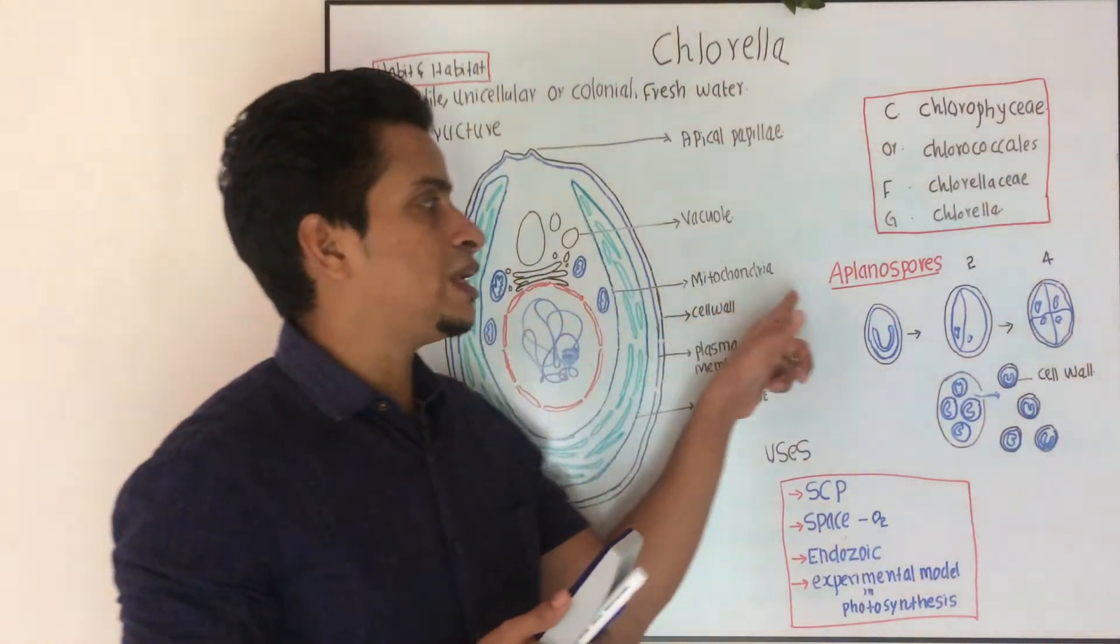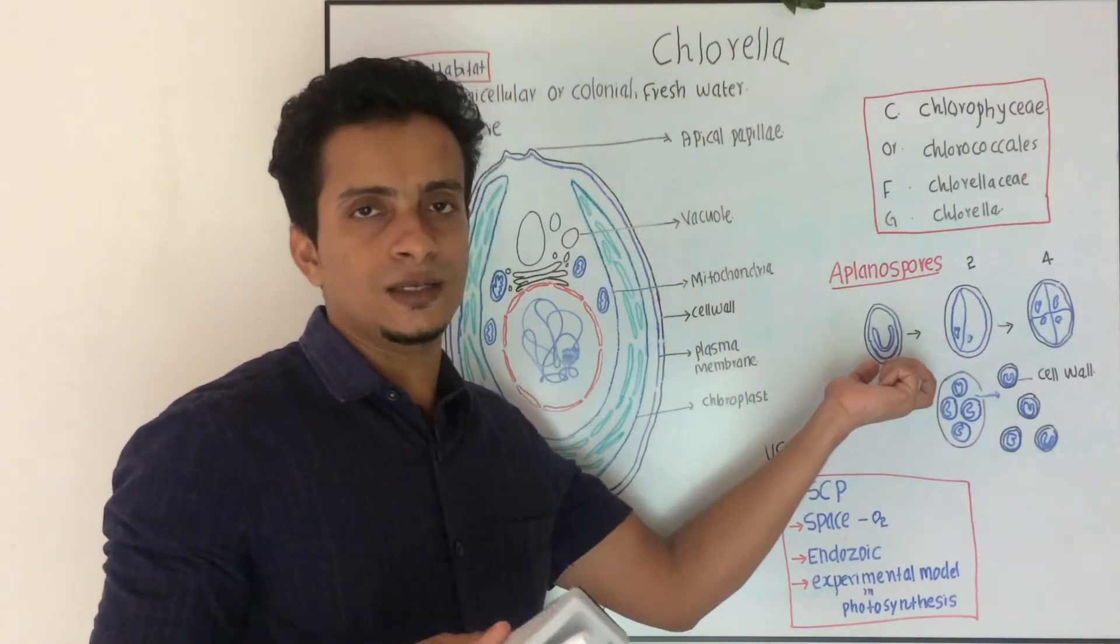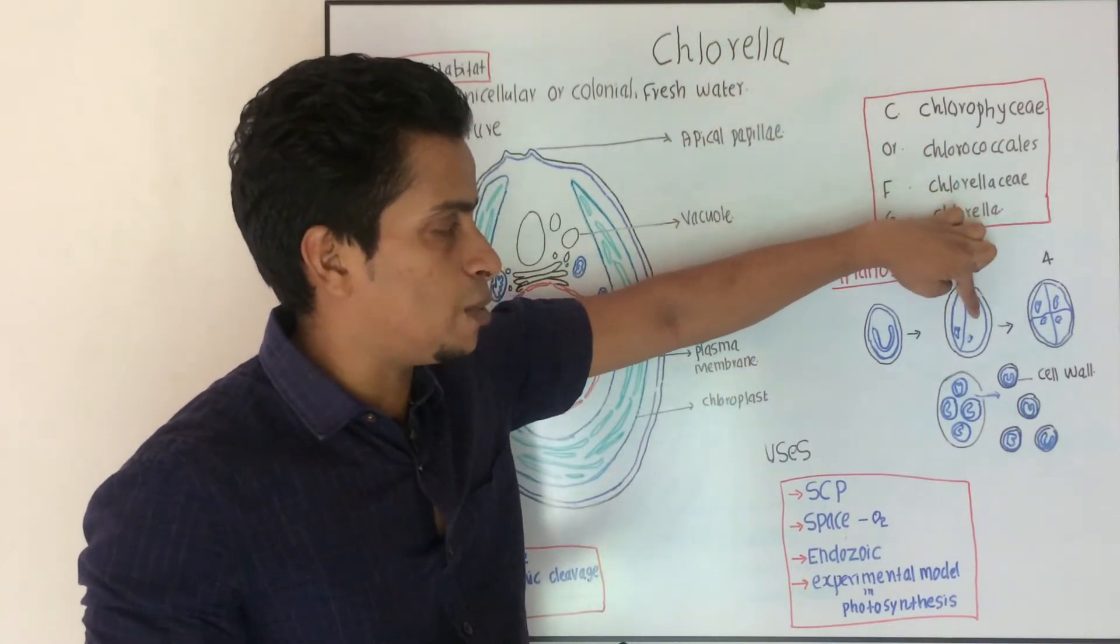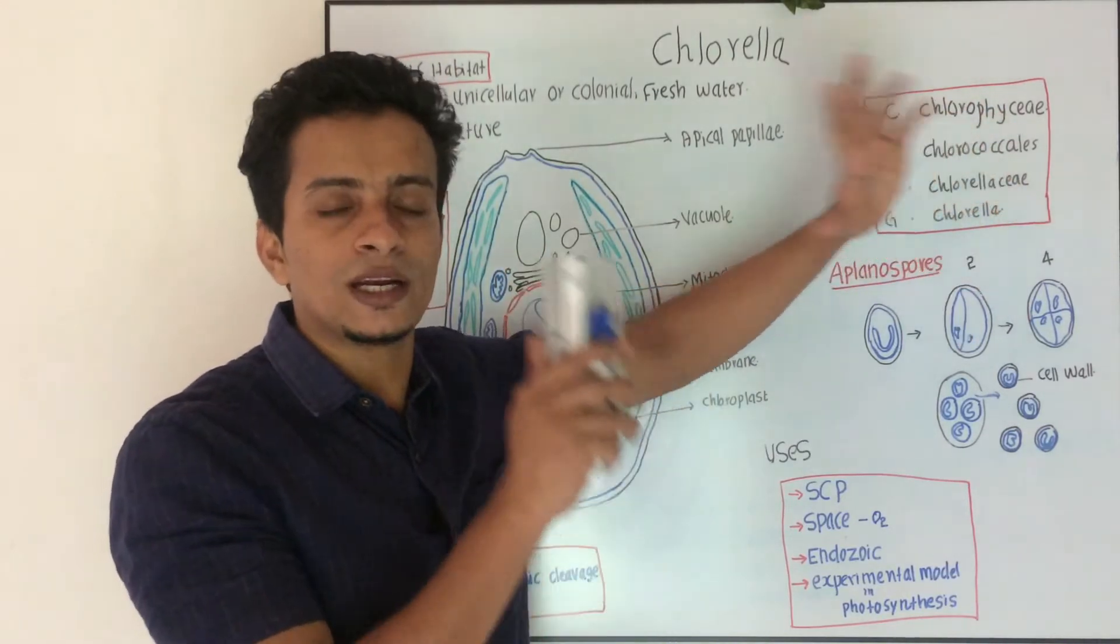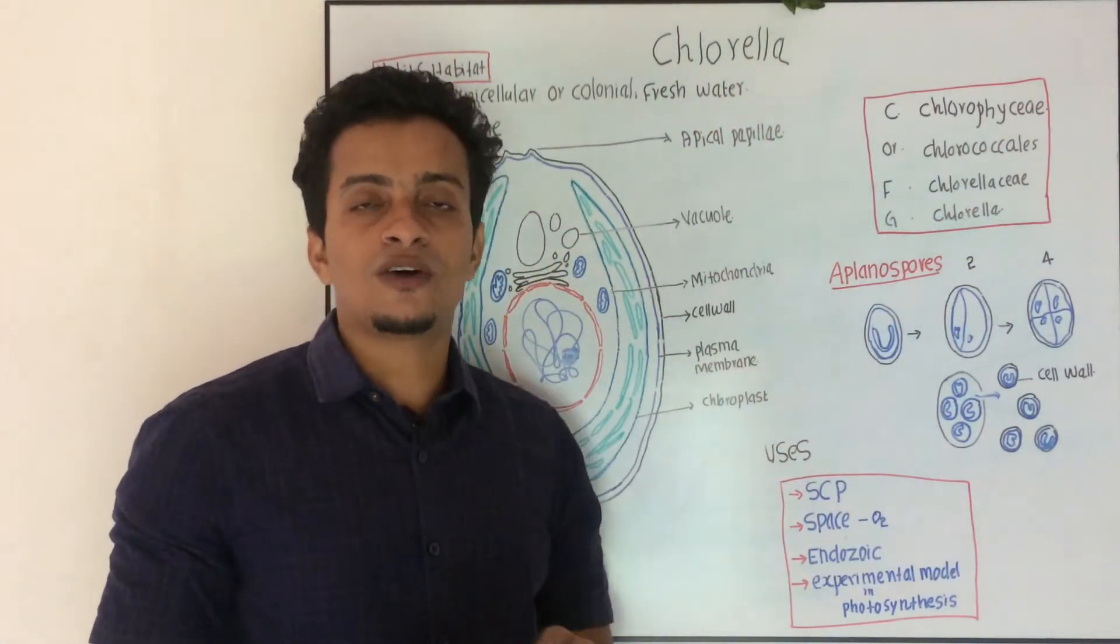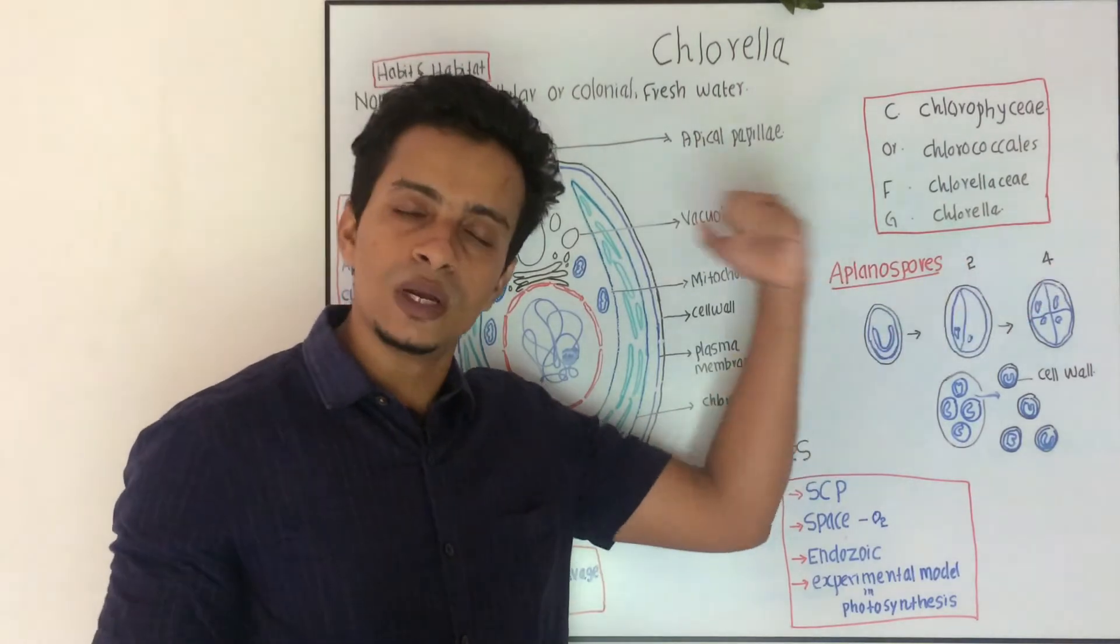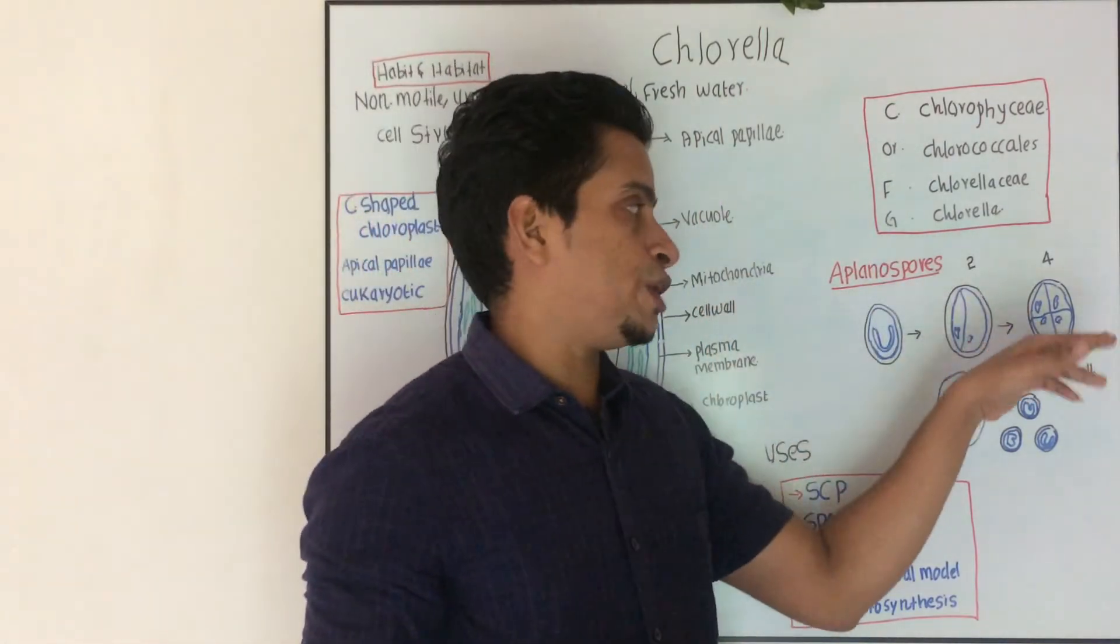Next, we will discuss about the aplanospore formation. There is a parent cell. This protoplasm accumulates, and this protoplasm, then is divided. The cell organelles are divided, then is equal to half. The progeny cells are newly formed, the daughter is new. The organelles are equally distributed, equally divided, divide and distribute.